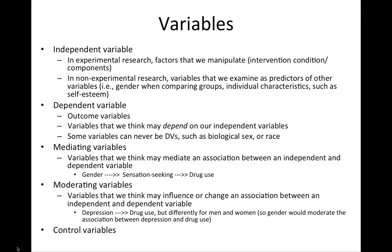Your book also talks about variables that we may want to control for, either in our experimental design or statistically after the fact, and extraneous or confounding variables. These are variables we may want to control for and try to remove the influence of, so that we can look at a more pure association between our independent and dependent variables.